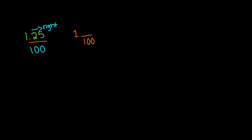Now what exactly is going to be our numerator? Well, the numerator is going to be 25. We've already taken care of the number 1, and we have our denominator, so the number that's left is 25. Our numerator is going to be 25, and our mixed number is 1 and 25 hundredths.